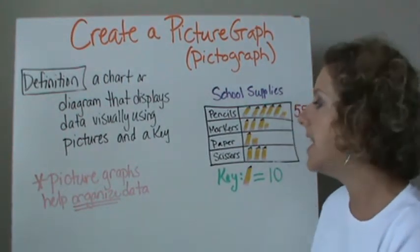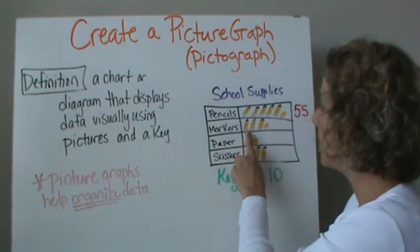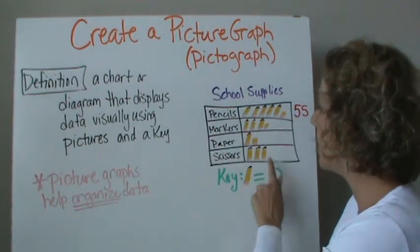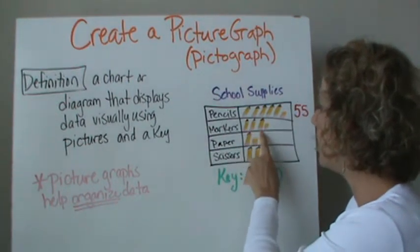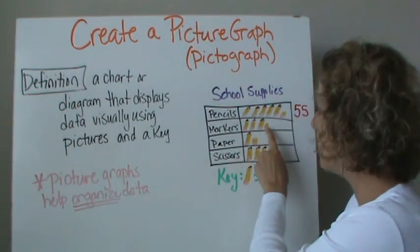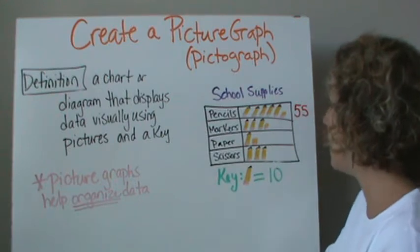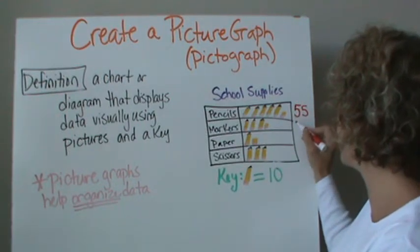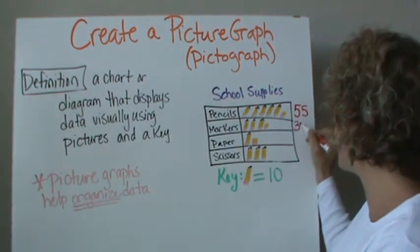The next one is markers. We're going to count by tens again: 10, 20, 30. And then we have a half, so it's going to be 35.